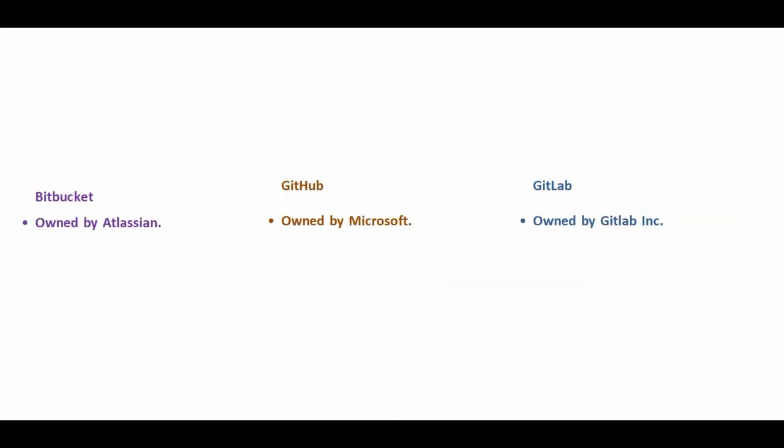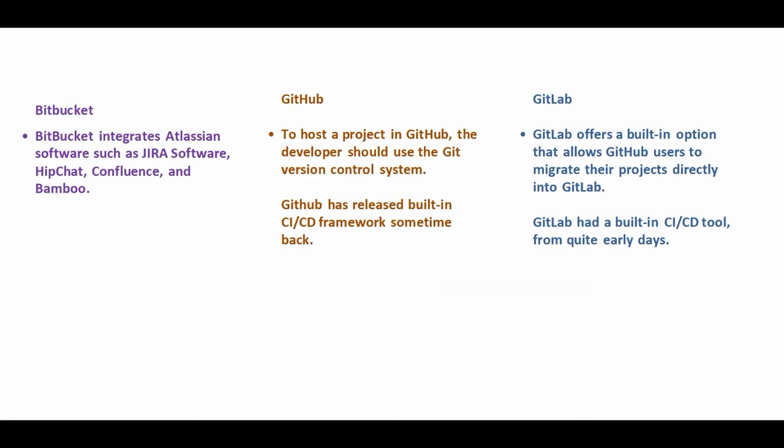Bitbucket is owned by Atlassian and GitHub is currently owned by Microsoft, whereas GitLab is owned by GitLab Corporation. Bitbucket integrates Atlassian software like Jira, HipChat, Confluence and Bamboo.